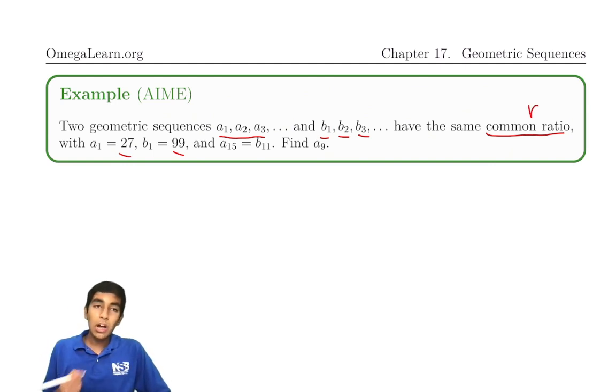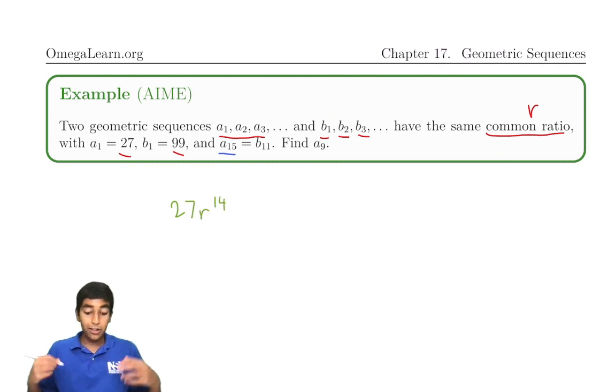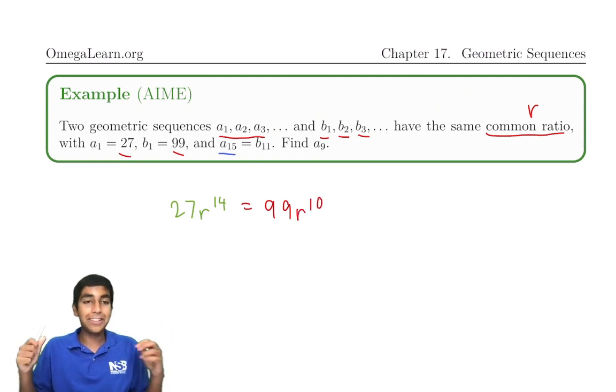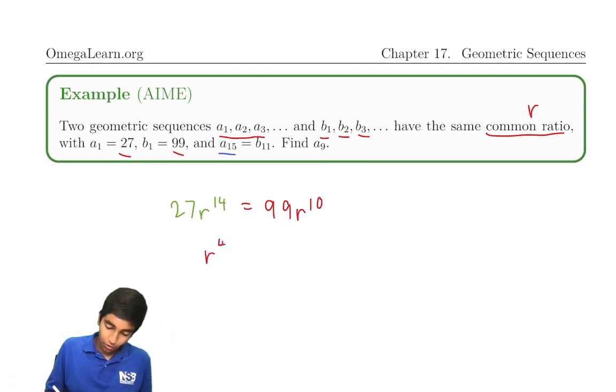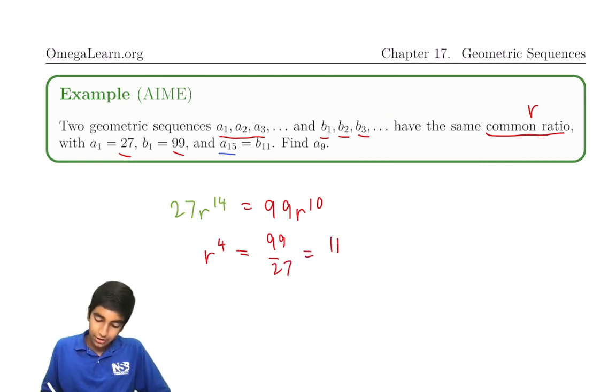What can the terms in sequence a be represented as? Let's zone in on a of 15. a of 15 is the first term, 27, times r to the 14. What is b of 11? b of 11 is 99, the first term, times r to the 10, because it's the 11th term. Let's do r to the 4 equals 99 over 27. 99 over 27, we divide by 9 on both sides, is 11 thirds.